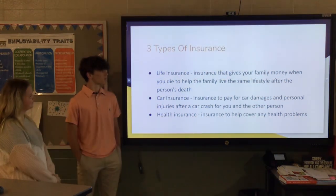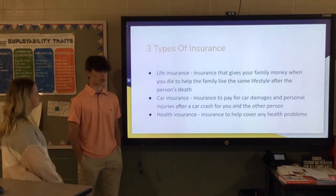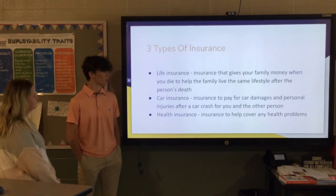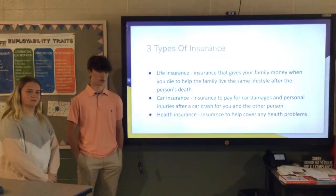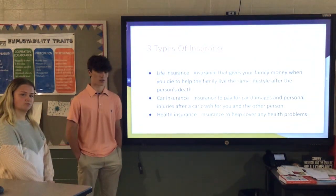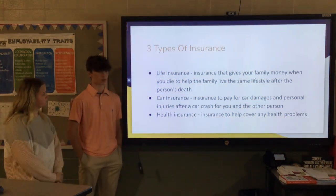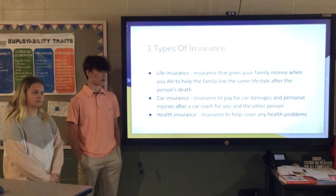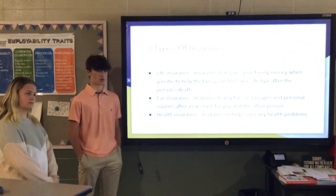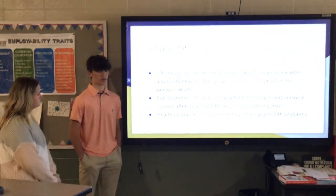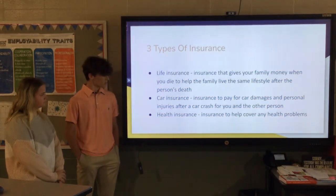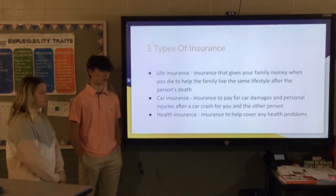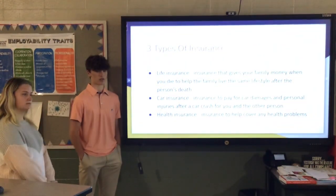There are three types of insurance. First, life insurance is the amount of money your family receives after you pass away to help them keep living the same way they've been living. Then there's car insurance, which helps pay for any damage to you, your car, or the person you hit in an accident. And then there is health insurance, which helps pay for any medical needs you have.